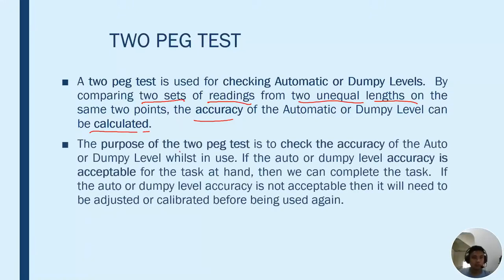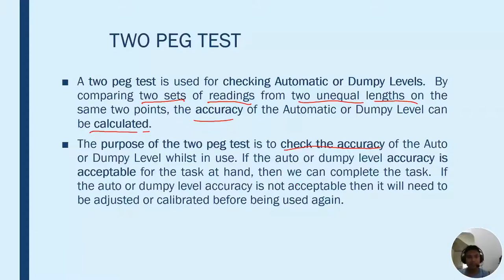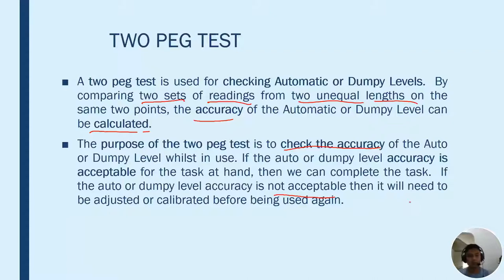The Two-Peg test is used for checking automatic or dumpy levels by comparing two sets of readings from two unequal lengths at the same points, so the accuracy of the automatic or dumpy level can be calculated. The purpose of the Two-Peg test is to check the accuracy of the auto or dumpy level while it is in use. If acceptable, we complete the task; if not, the instrument needs to be adjusted or calibrated before using it again.